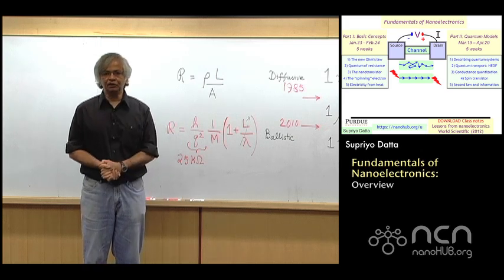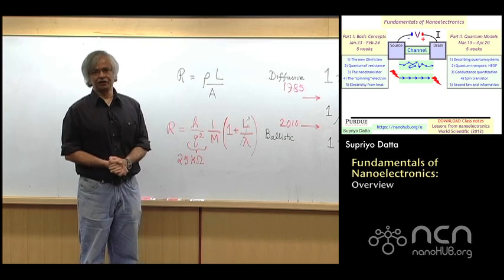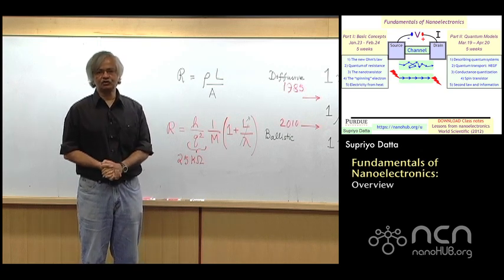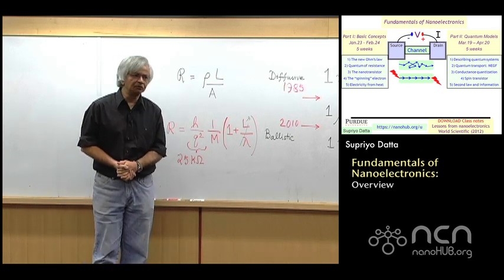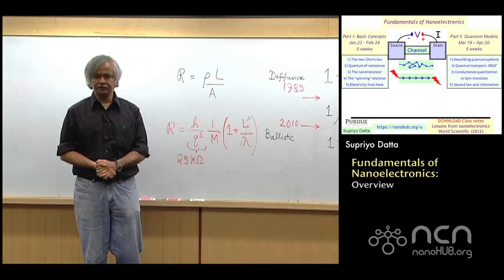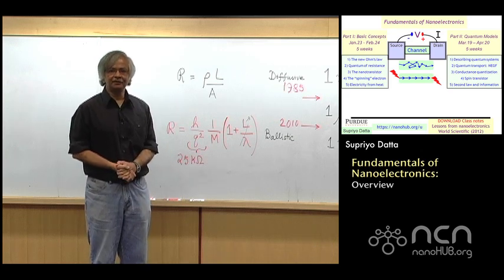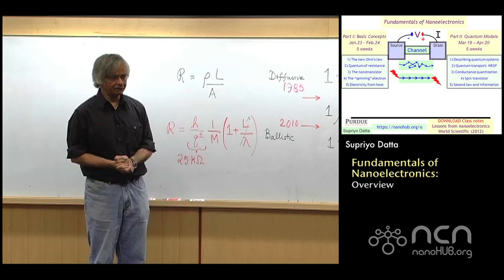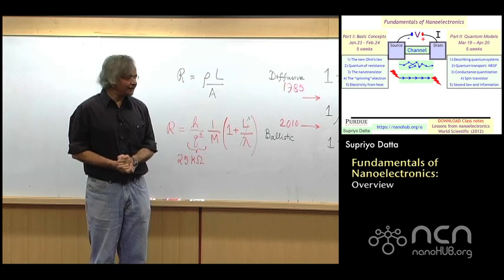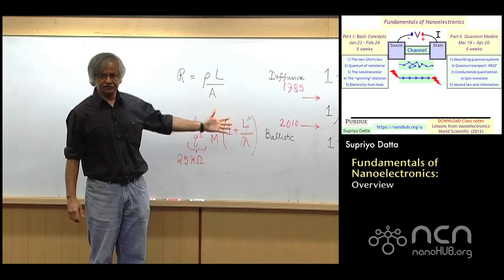But what I do try to avoid is using jargon, specialized jargon. Just to give you an example, anybody who works on electronic devices, has taken a course on it, would know what source and drain means. On the other hand, if you're a biologist, you probably don't know what that is, I've never heard that word. So the point is if I use the word source and drain, I'll try to make sure I explain what I mean by that first. That's the kind of thing we have tried to do so that this is accessible no matter what your background is.